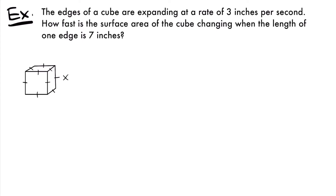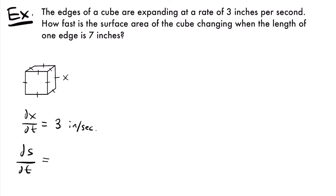Now we write down everything we know. We're told the edges are expanding at 3 inches per second, so dx/dt equals 3 inches per second. We're asked how fast the surface area is changing, so ds/dt is unknown — that's the rate we're solving for. And we want that rate when the length of one edge is 7 inches, so x equals 7 inches.